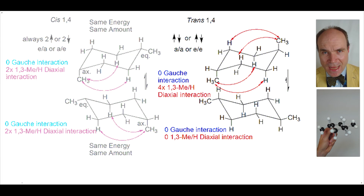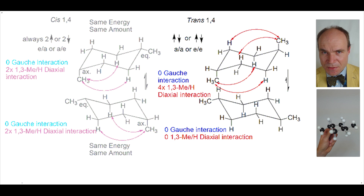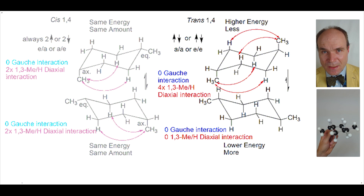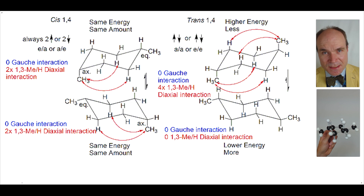When we compare the two chair conformations arising from trans-1,4-disubstitution patterns, the first one has a higher energy than the second one. Therefore, the first one has lower abundance and the second one has higher abundance.